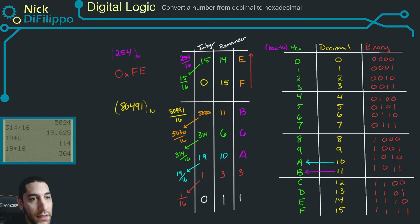Decimal one is equal to hex one. And then we read it off this way. So 80,491 is equal to hex 1, 3, A, 6, B. So hopefully this shows you how you can convert decimal to hexadecimal.